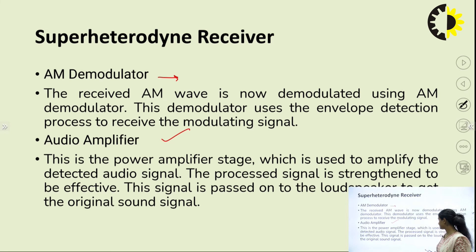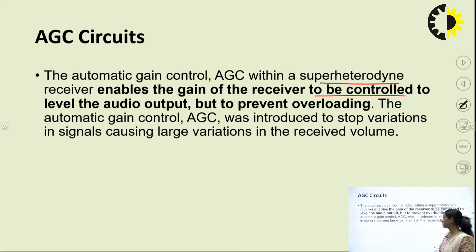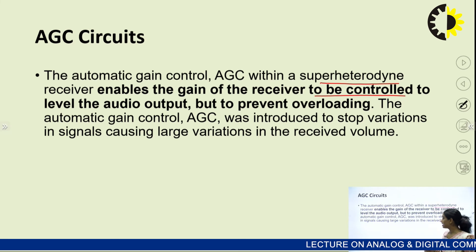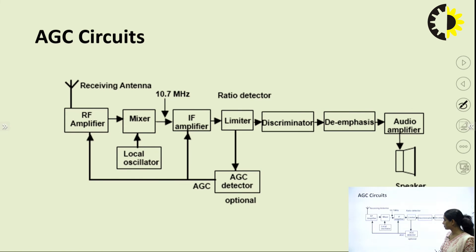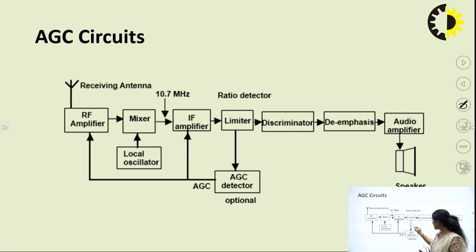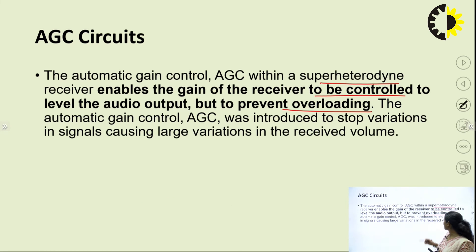After the audio amplifier, an important component is the AGC — automatic gain control circuit. This is part of the superheterodyne receiver and enables the gain of the receiver to be controlled to level the audio output, preventing overloading. The signal passes through the mixer, IF amplifier, limiter, discriminator, de-emphasis, audio amplifier, and speaker. The AGC circuit is applied in a feedback loop to the limiter to manage the gain and prevent overloading.